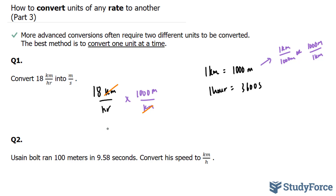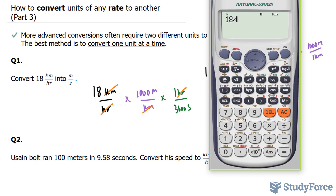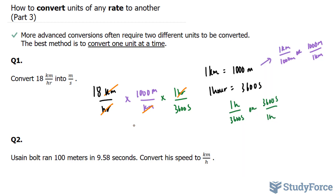Now we want to convert from hours to seconds. This can be written as 1 hour over 3,600 seconds, or 3,600 seconds over 1 hour. We will be using the top one — 1 hour over 3,600 seconds — because the hour units will cancel out. So we're left with 18 times 1,000 divided by 1 times 1 times 3,600, which gives us 5. That is 5 meters per second.